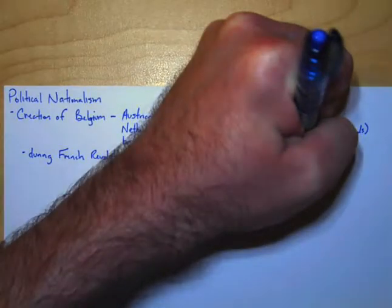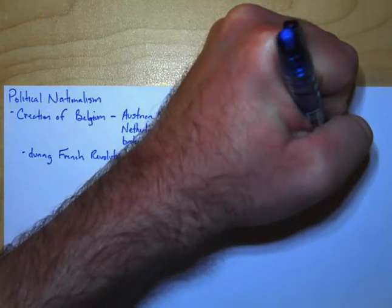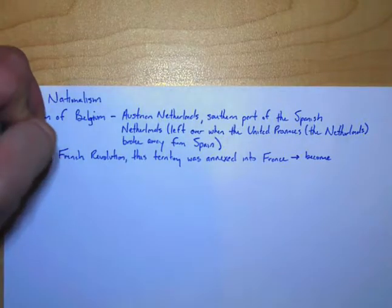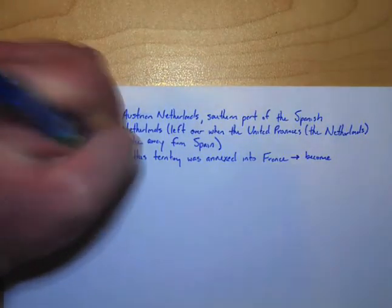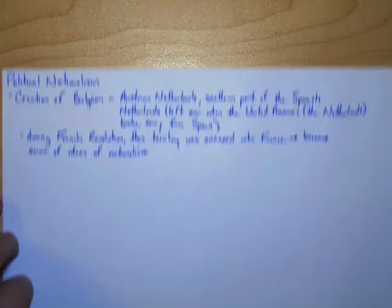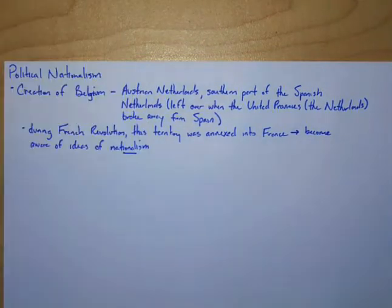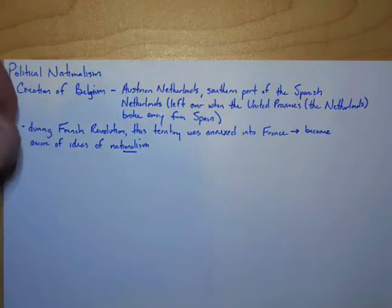During this period, the people in this area become aware of the ideas of nationalism, because that was a big part of the French Revolution. So nationalism becomes prevalent in what is going to become Belgium. We finish with the French Revolution, we get rid of Napoleon, and we jump ahead to the Congress of Vienna.